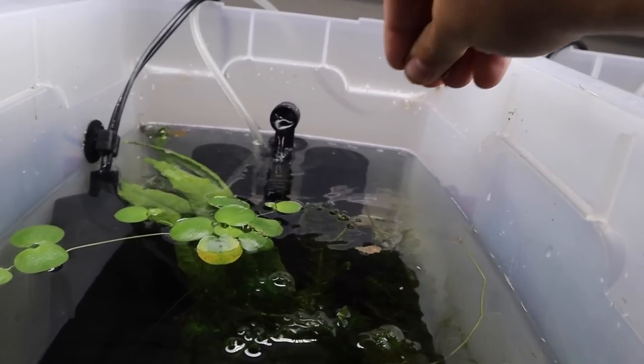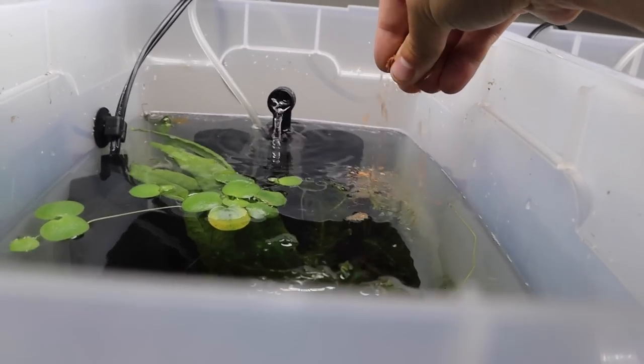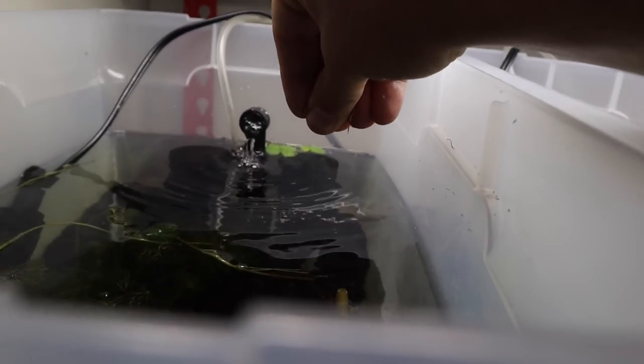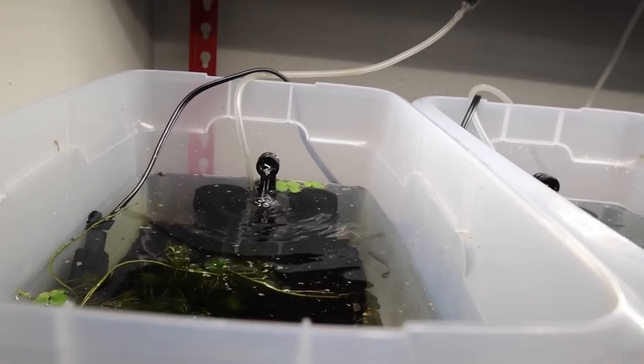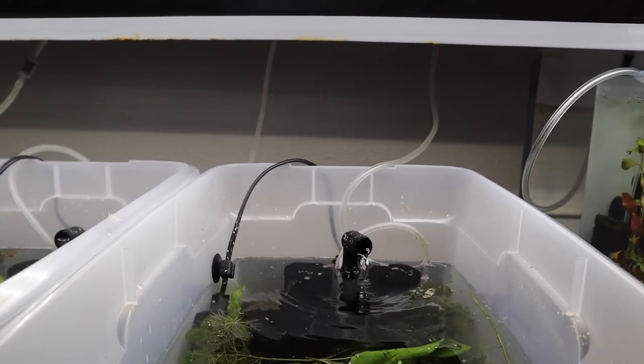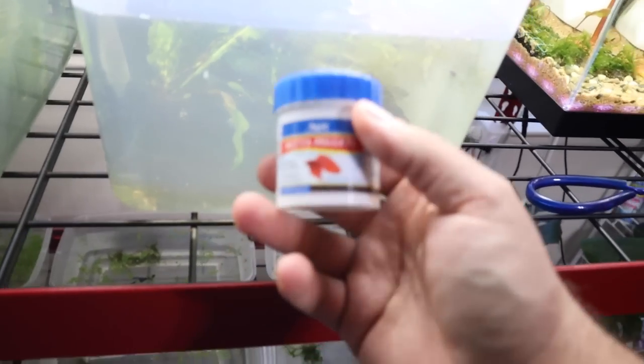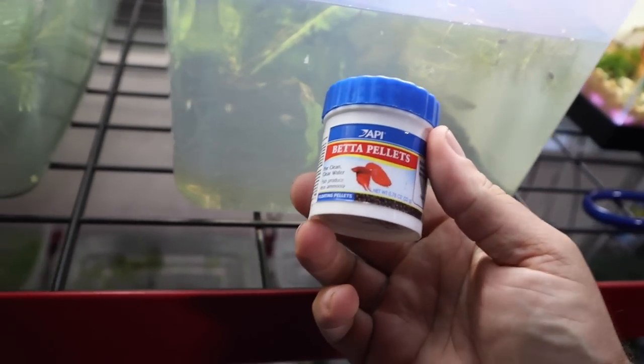We'll feed each one of these tubs just a little bit of this fish flake. They love this stuff. So hopefully that'll keep them from trying to eat their young now that they have some food in here. These bettas absolutely love API betta pellets.